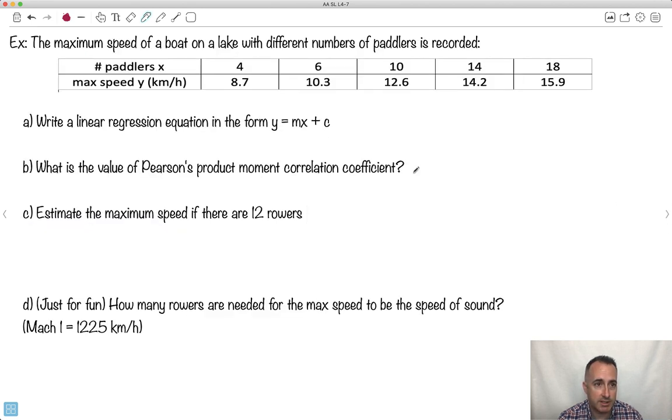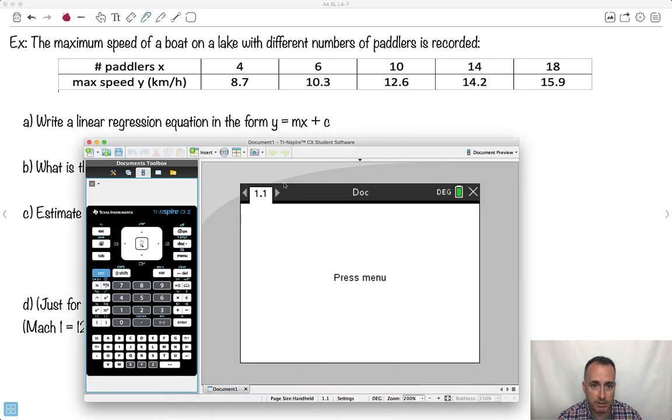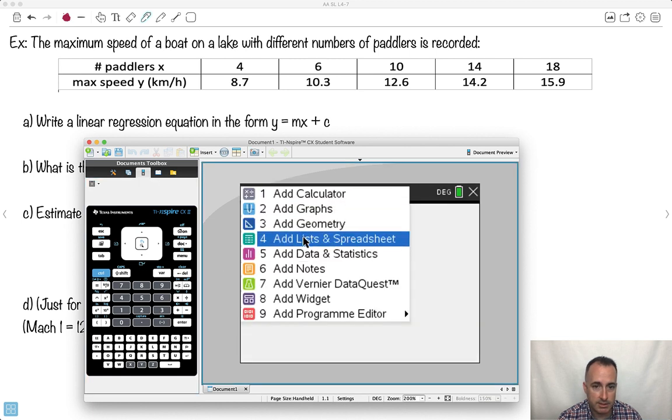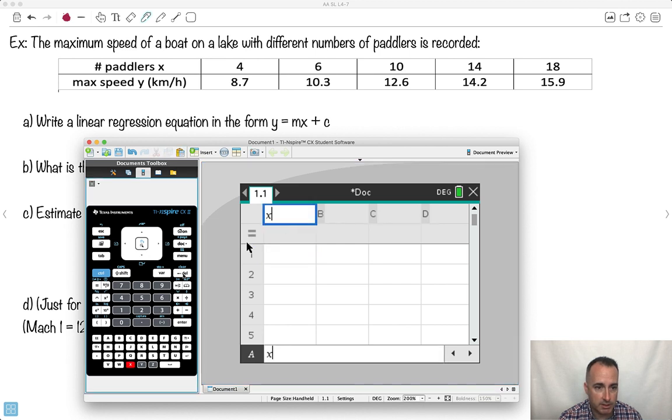I have a fun example here. Maximum speed of a boat on a lake with different number of paddlers is recorded. So maybe four people paddling the boat, you go 8.7 kilometers per hour. If you have six people, you go 10.3, and so on. The whole idea is let's do a linear regression equation in the form Y equals MX plus C. Step one, get out my calculator. You've got to put this into a list. I'm going to call this one rowers, and then my next one I'll call speed. So rowers and speed.